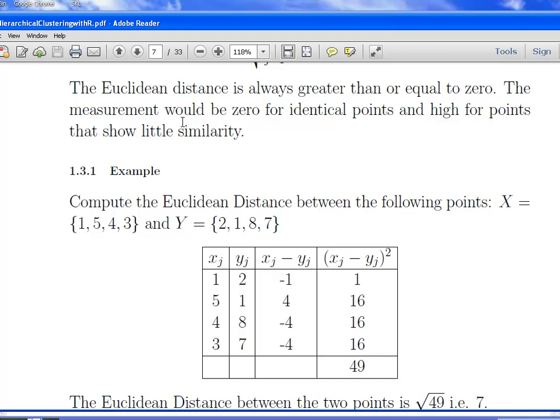Now, compute the Euclidean distance between the following points. X, where it has the values for four variables, one, five, four, and three. And Y, which with the same set of variables, two, one, eight, and seven. So here we have X, here we have Y. These are each of the four variables here. The first variable, X is one, Y is two. For the second variable, X is five, and Y is one. Third variable, four and eight, and so on. Now what we're going to do is get the difference between the two. Just keep it in the same direction the whole way through. Minus one, four, minus four, and minus four.